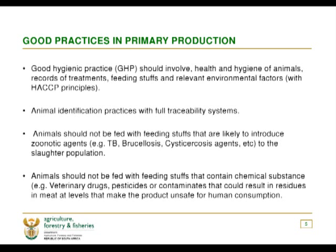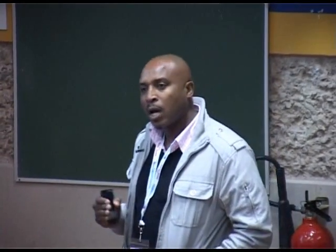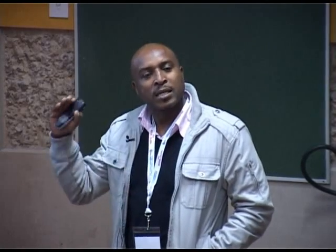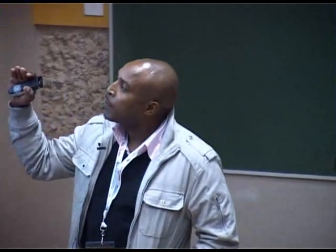Animal identification practices with full traceability systems should be in place. Animals should not be fed with feeding stuffs that contain chemical substances such as veterinary drugs, pesticides, or contaminants that could result in residues in meat at levels that make the product unsafe for human consumption. If at the production level everything was according to how it's supposed to be, there would be no need for an abattoir to control or verify — because the abattoir is all about verifying that those animals are safe and free from disease.